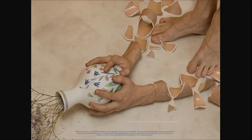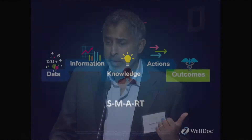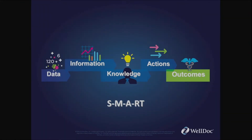I would assert we only have two problems in healthcare. One: the right data is not getting to the right person at the right place at the right time — that's the problem of connectivity, which every other industry has solved. You get tips on when to buy and sell stocks; why can't you get tips on when to exercise, what type of exercise, what food? The harder problem is behavior management — how do we convert data into information, knowledge, action, and ultimately outcomes in a manner that's SMART: Specific, Measurable, Actionable, in Real Time?